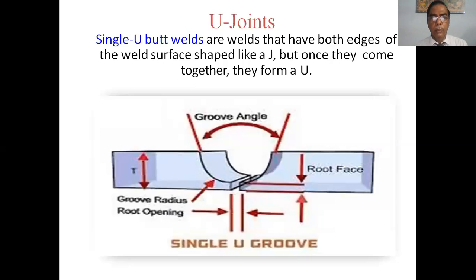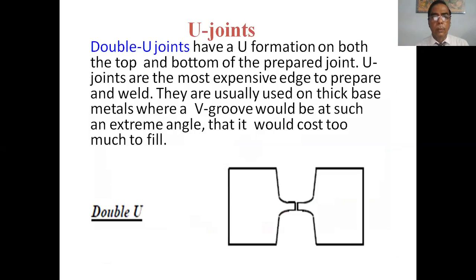U joint — single U butt joint. Butt welds where both edges of the weld surface are shaped like a J, and once they come together they form a U. The figure shows root angle, thickness T, root radius, root face, and root opening. Double U joints have a U formation on both the top and bottom of the prepared joint. U joints are the most expensive edge to prepare and weld. They are usually used on thick base metals where a V groove would be at such an extreme angle that it would cost too much to fill.